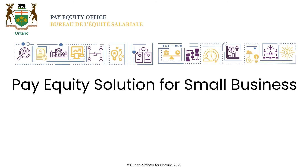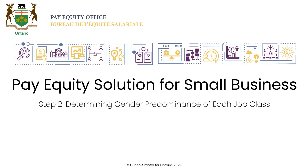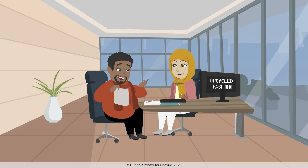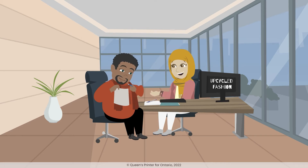In this video, we will go over Step 2 to demonstrate how to determine the gender predominance of each job class. Haifa and Lucien, owners of Upcycled Fashion, are seen in their office discussing Step 2 of the Toolkit.